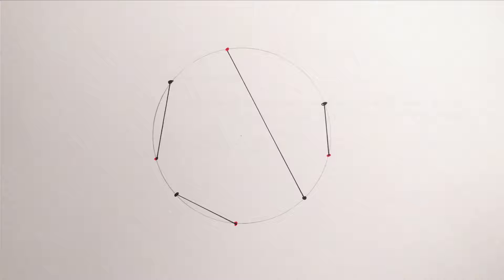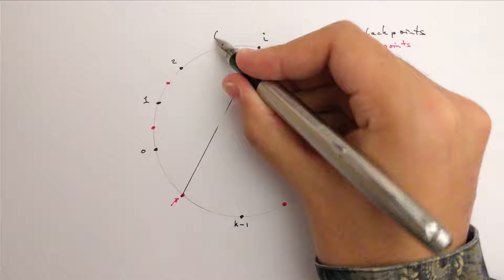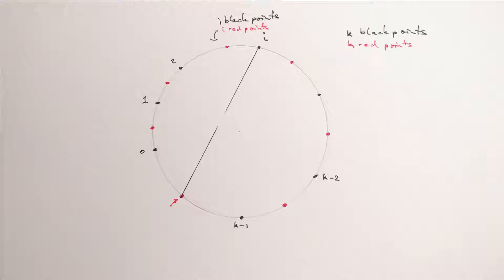Let k be the number of points of either color, and number the black points clockwise from 0 to k-1. This red point may be matched to any of the black points, let's say point number i. Then on one side of this line, we have i points of either color. And on the other side, we have k-i-1 points of either color.